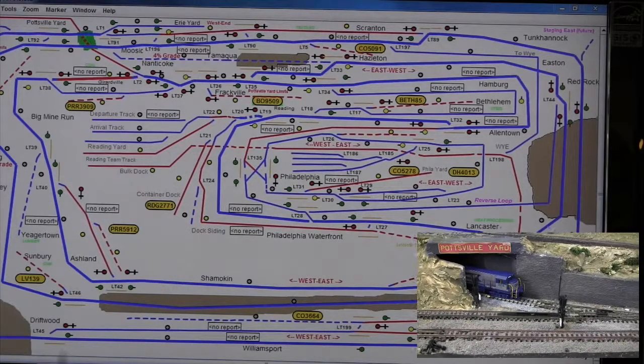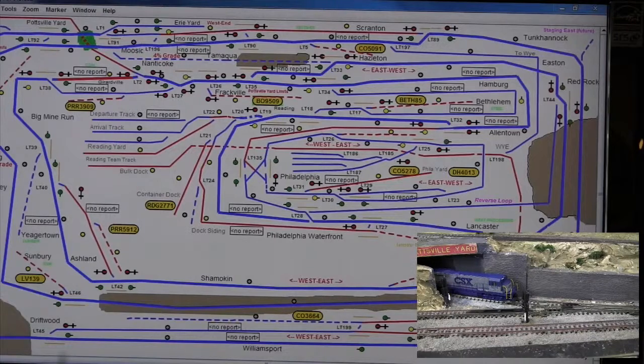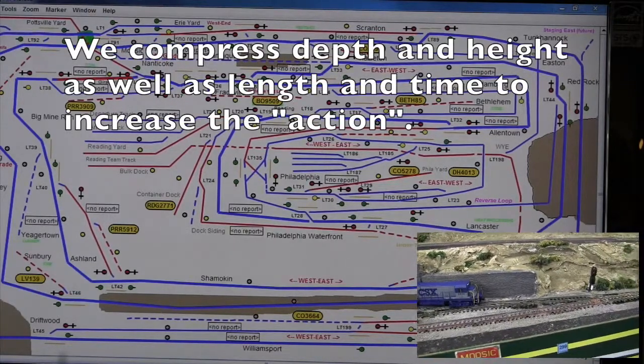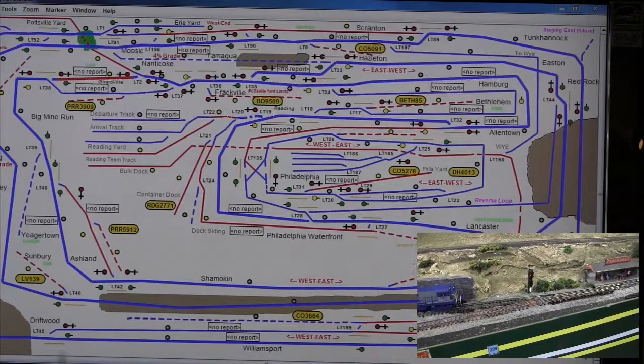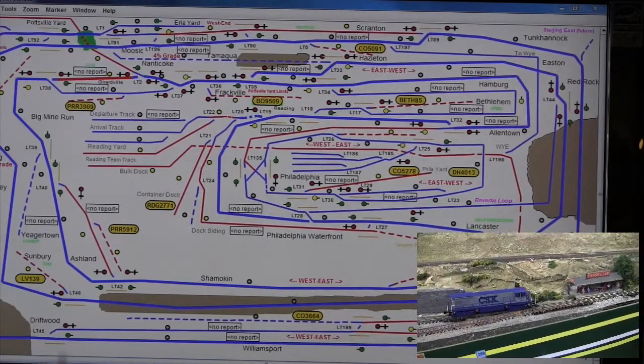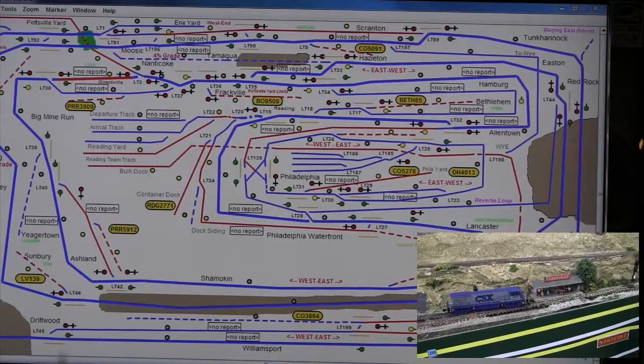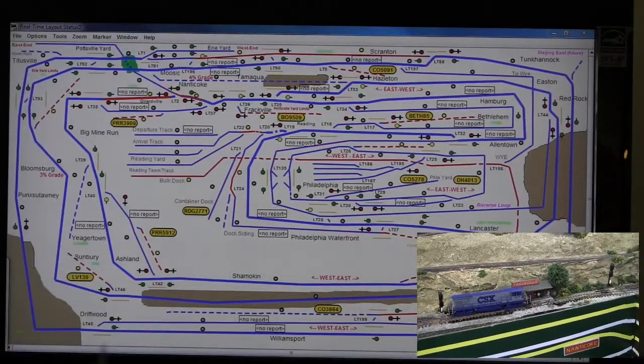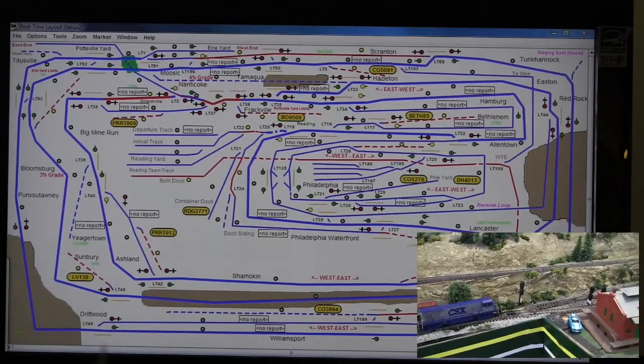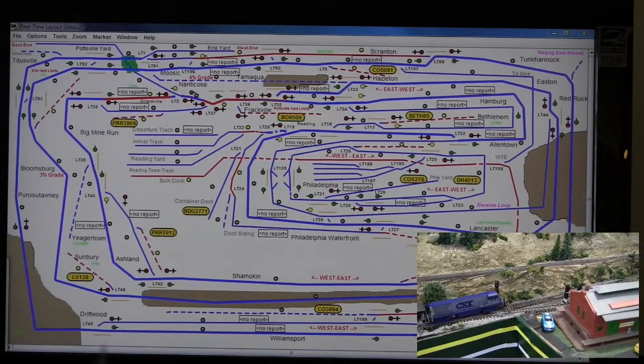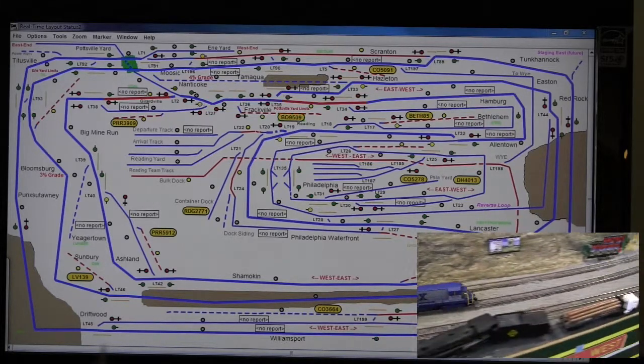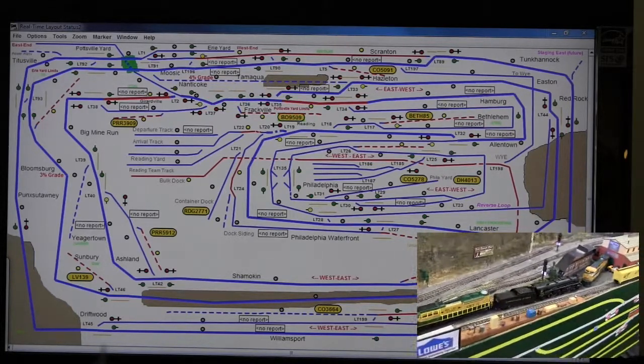Coming out is train 5574 out of the Pottsville St. Clair Yard. Leaving St. Clair Yard, approaching Frackville, approaching Pottsville.